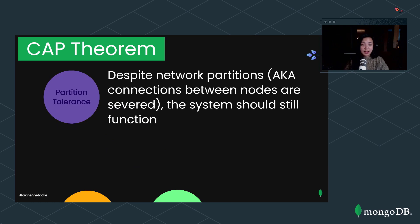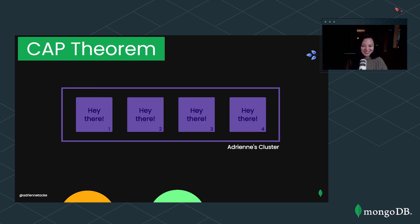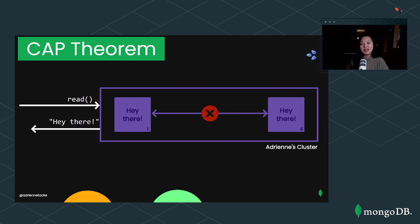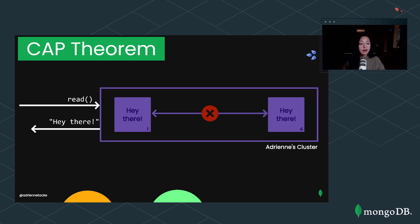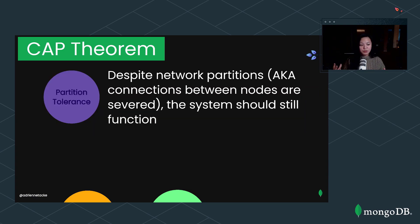Lastly, the P in CAP theorem stands for partition tolerance, which states that despite network partitions — where connections between nodes are severed — the system should still function. In our cluster, if two nodes can't communicate with each other, a partition-tolerant system ensures that despite this, it still remains functional. We're still able to receive 'hey there' back from a read call.